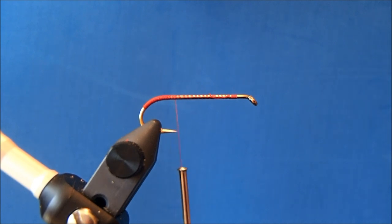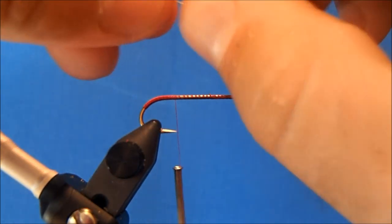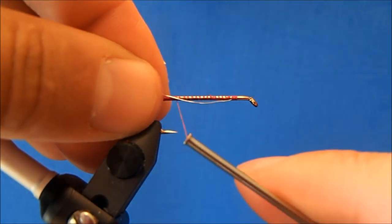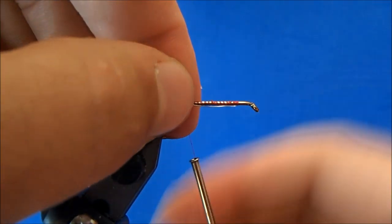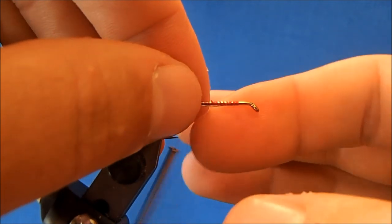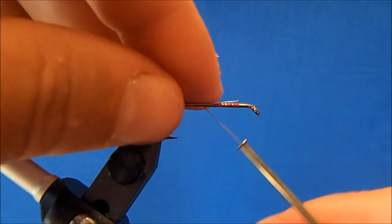Now I can tie in my rib and for that I'm going to use just a brassy size silver wire and I want this to run the entirety of the hook shank so I'll tie it into the side and I just want to make sure that it goes all the way up to where I've started my red thread.